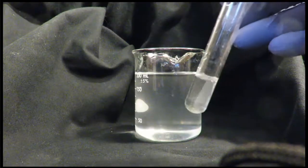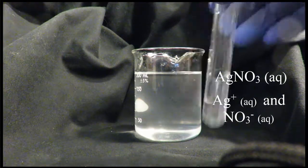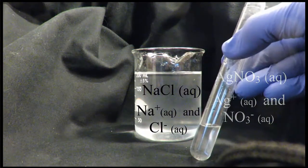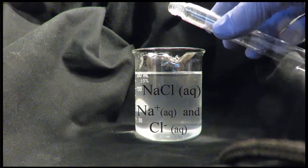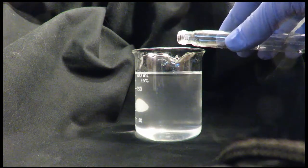So now that we have these two aqueous solutions, the AgNO3 and then the NaCl, we'll mix them together. Remember, they're both aqueous, so they're split apart into their ions. When we do that, this is what happens.